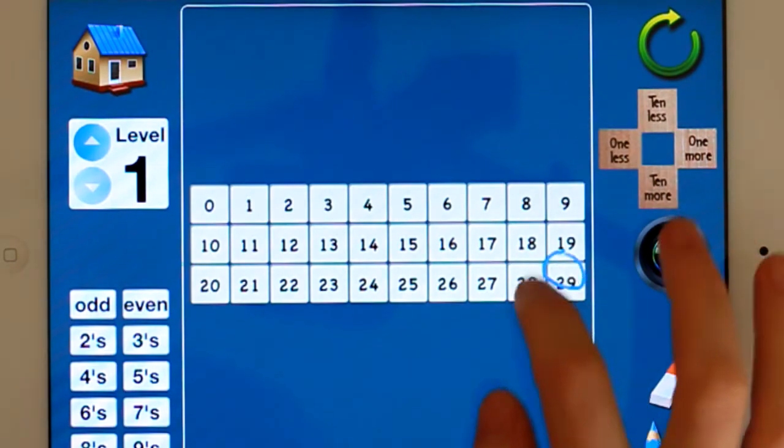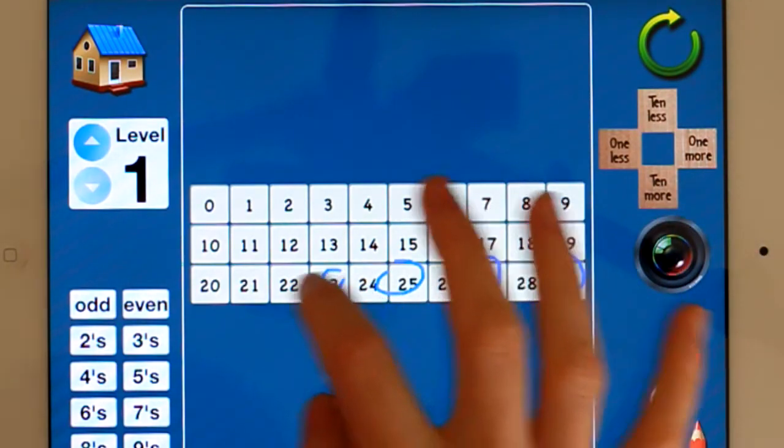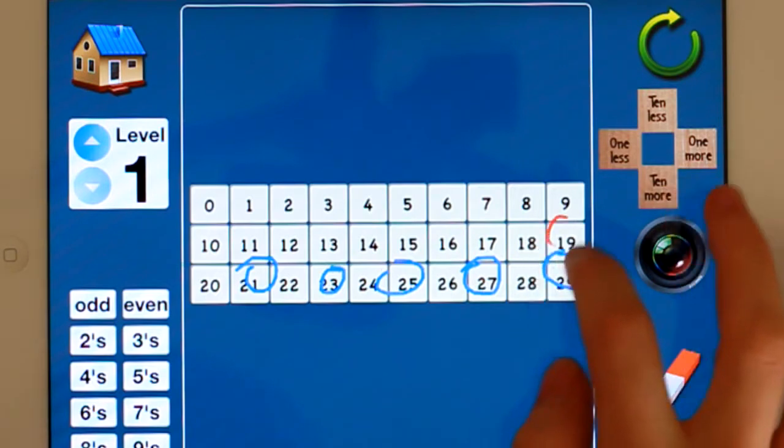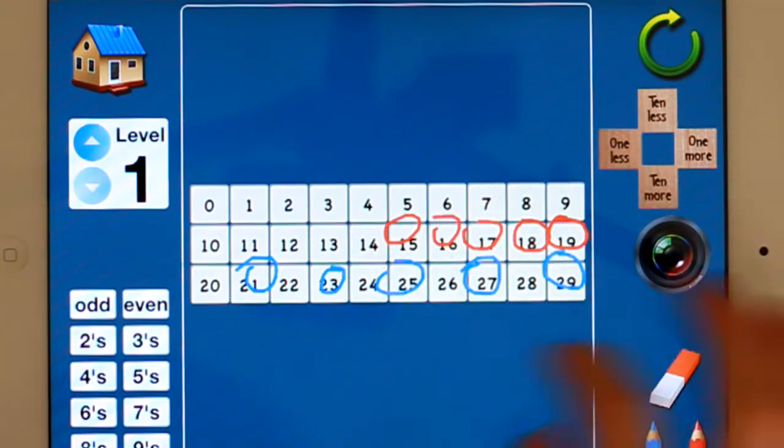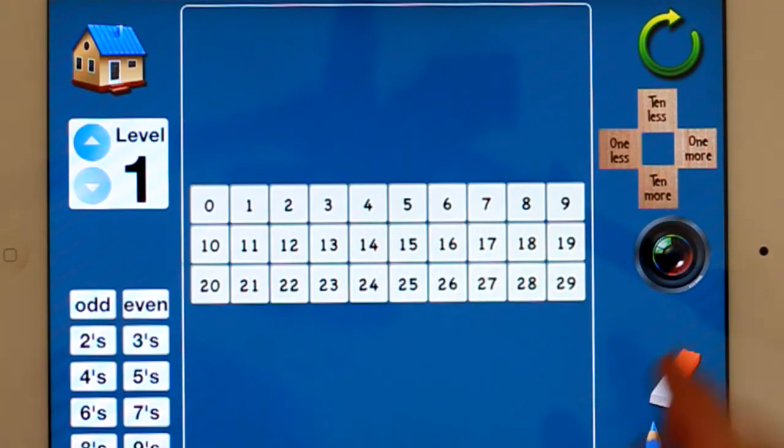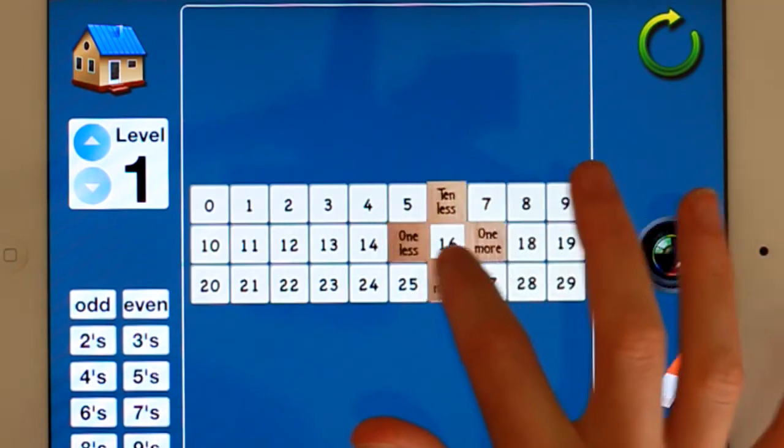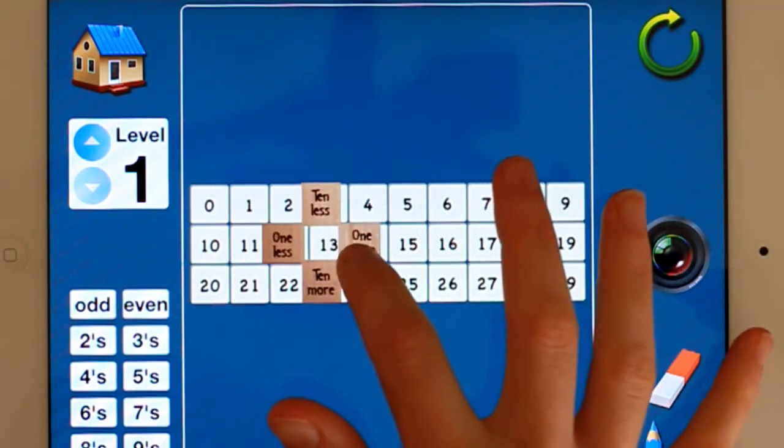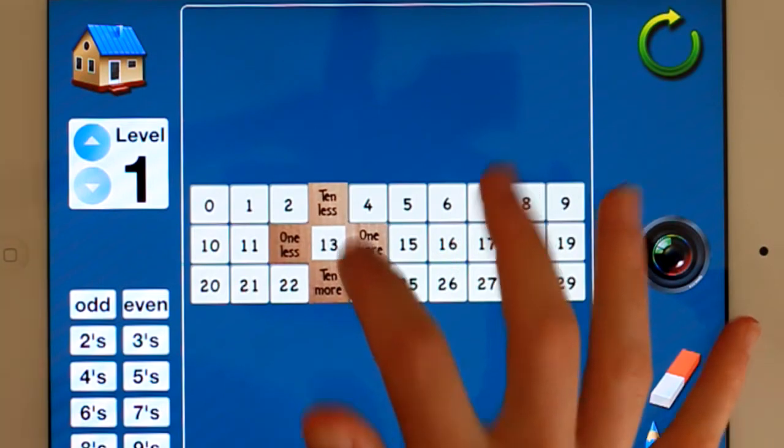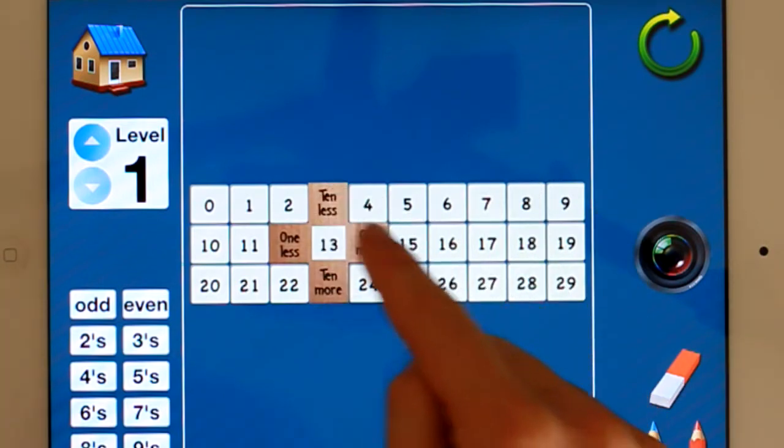So you've got your pencil where you can circle, et cetera, lots of evens. Your recording tool, I'll delete them off. This is something that I loved using in the classroom. So find 13, now tell me 10 less, 10 more, 1 more, 1 less.